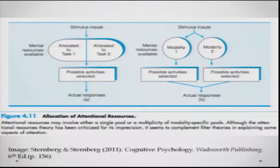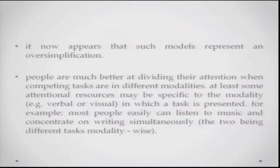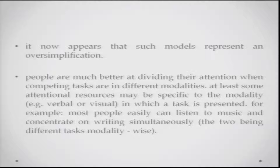These are two hypothetical approaches to studying attention — not really hard facts about how attention operates. Both kinds of theories have been tested with many experiments. Even looking back at these models, they represent a degree of oversimplification. It has been found that people are much better at dividing attention when competing tasks are in different modalities — for example, if one task is visual and the other is auditory, people have been found to do that almost effortlessly, without really slowing down or being too inaccurate.